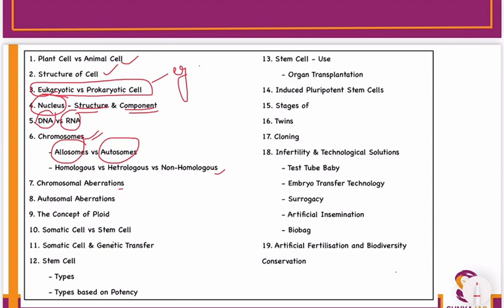Then you have to do the concept of chromosomal aberrations — the diseases or consequences which arise because of chromosomal aberrations. Then do autosomal aberrations, and then the concept of ploidy.